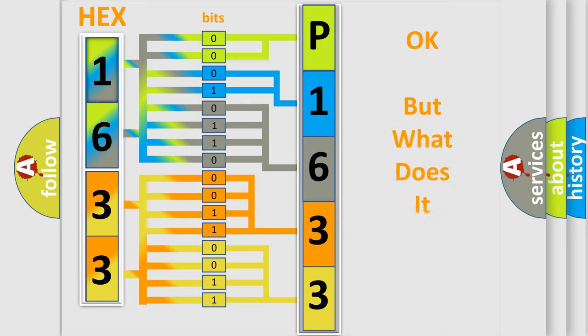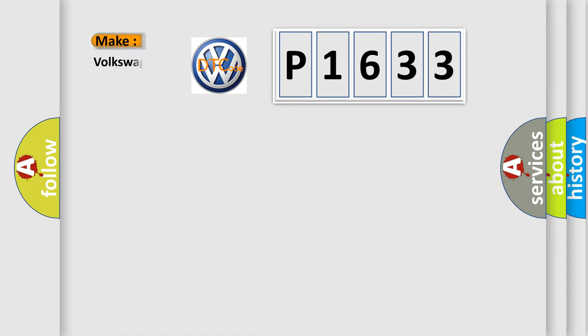The number itself does not make sense to us if we cannot assign information about what it actually expresses. So, what does the diagnostic trouble code P1633 interpret specifically for Volkswagen car manufacturers?